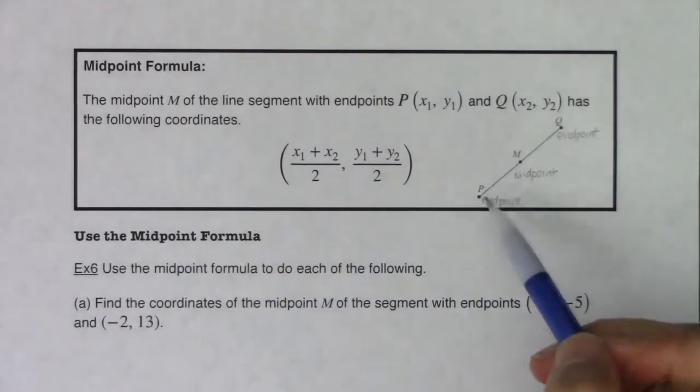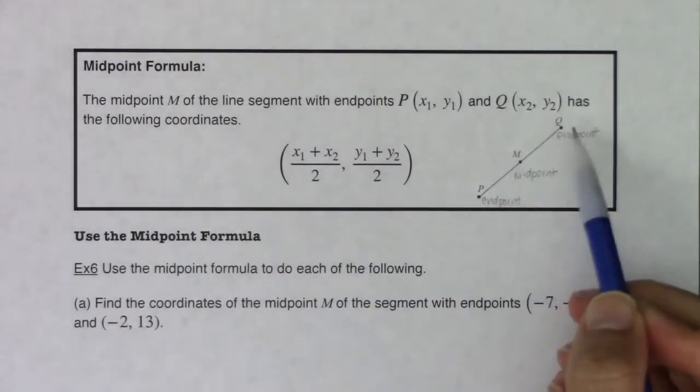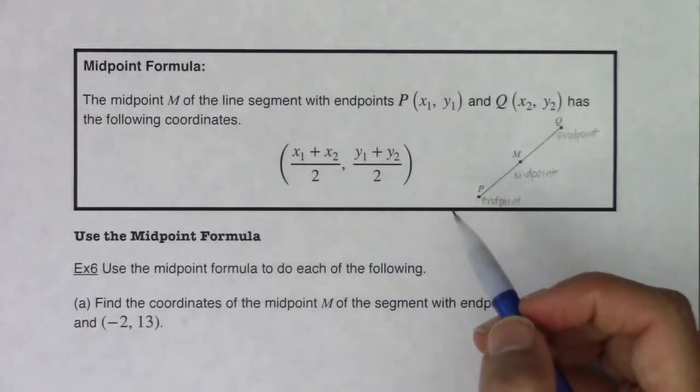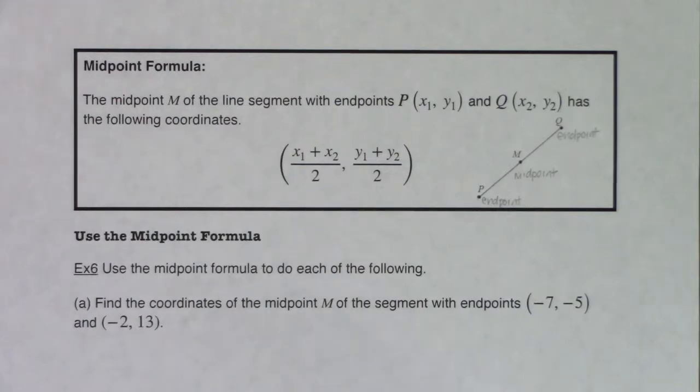Alright, or vice versa. If we have an endpoint and a midpoint, we could find the other endpoint. Endpoint and a midpoint, we could find the other endpoint. So we're going to work this formula. So let's take a look at example six.